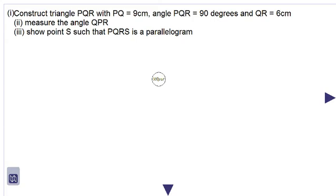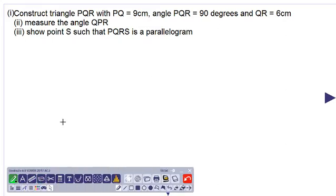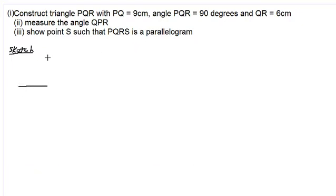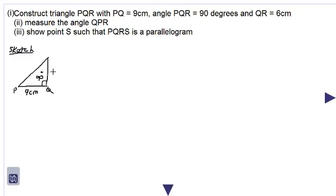Let us construct this triangle and then the parallelogram. First we will make a little sketch so we have an idea of how this diagram will look before we construct it. We have a triangle PQR with PQ 9 centimeters, angle PQR 90 degrees, and QR 6 centimeters. So we have a right angle triangle with a 90 degree angle at point Q. From P to Q is 9 centimeters and from Q to R is 6 centimeters.